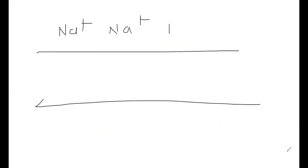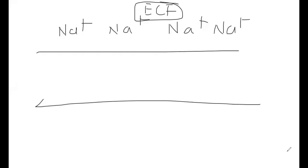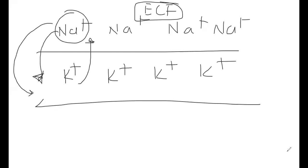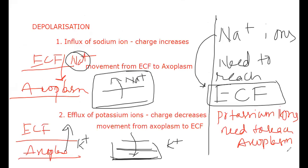Remember the resting state: sodium ions are 10 times greater in ECF, so more sodium ions are found in the ECF. And more potassium ions are found in the axoplasm. During depolarization, there is an influx of sodium, and during repolarization and hyperpolarization, there is an efflux of potassium. That means there is a displacement — sodium ions reach inside, so they have to go back, back means going outside.